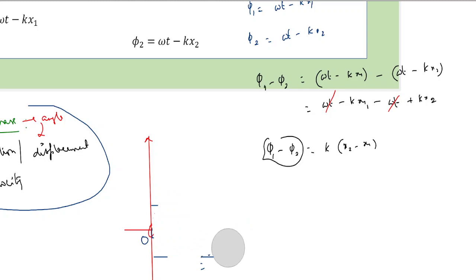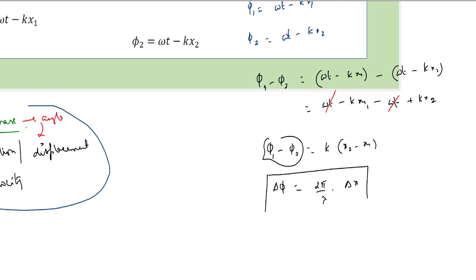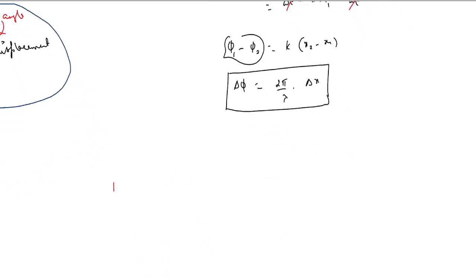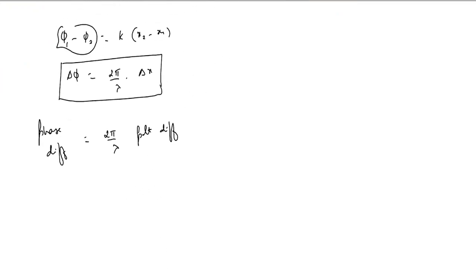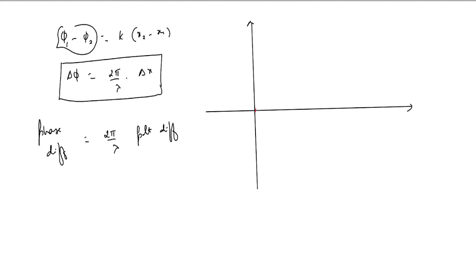We call this the phase difference. So Δφ = k × (x₂ − x₁). Since k was defined as 2π/λ, and (x₂ − x₁) is the path difference, we get: phase difference = (2π/λ) × path difference. This is the expression relating phase difference and path difference. To make sense of it, let's draw the snapshot of a wave at a given time and verify it.